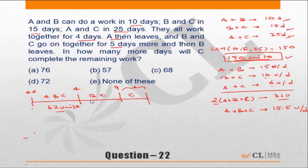Next five days, B and C work together. Look at this: B and C do work at the rate of 10 units per day. They have worked for five days, so 5 times 10, they have done 50 units of work. Total work is 150 units. Out of it, 62 plus 50 is 112 units have been consumed.